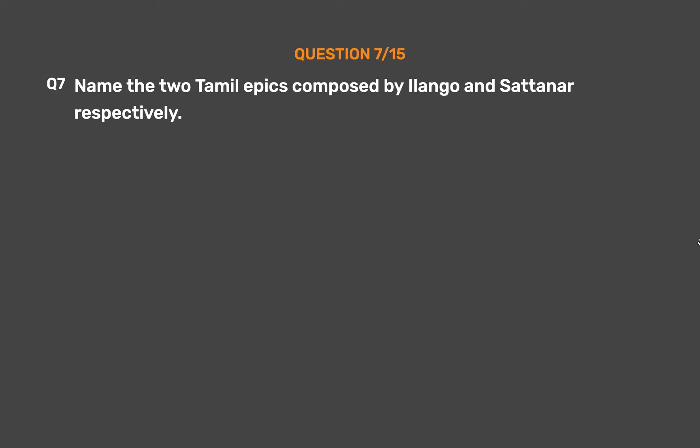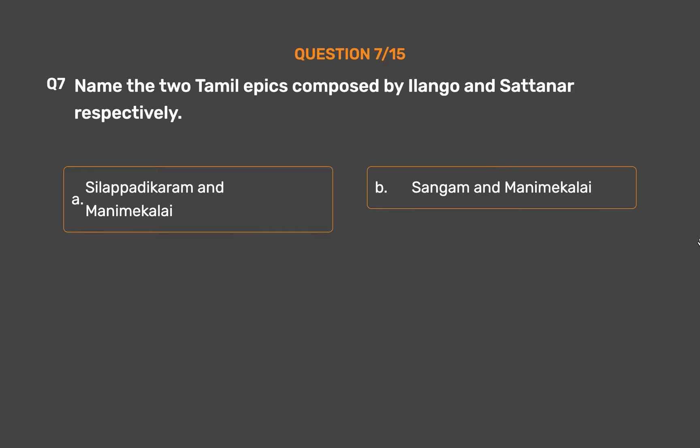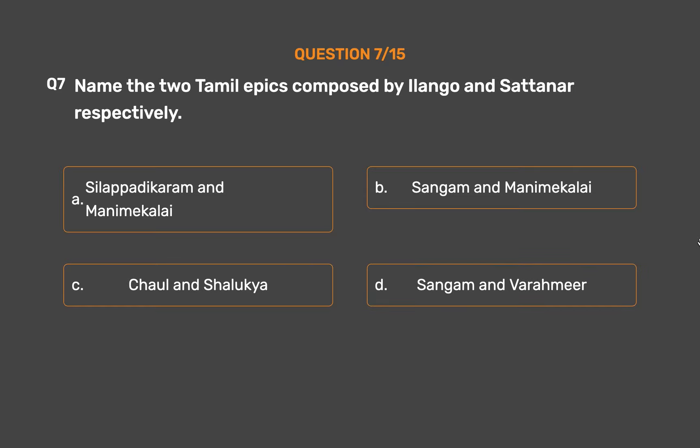Question No. 7. Name the two Tamil epics composed by Ilango and Sattana respectively. Option A: Silappadikaram and Manimeklai. Option B: Sangam and Manimeklai. Option C: Chol and Shalukya. Option D: Sangam and Varamir.